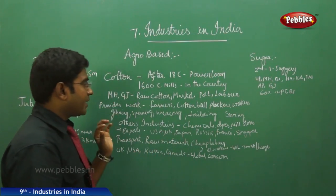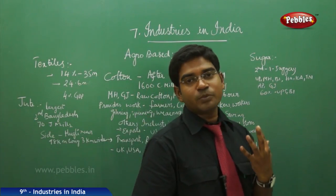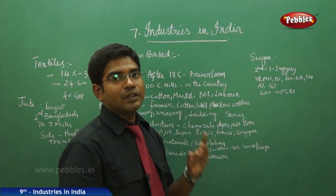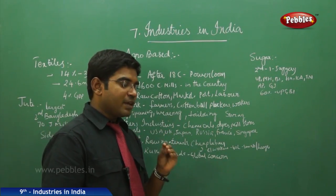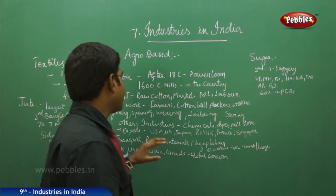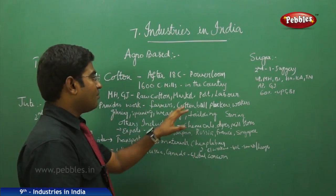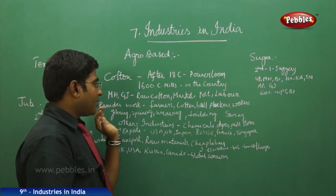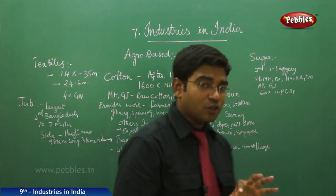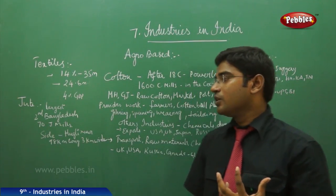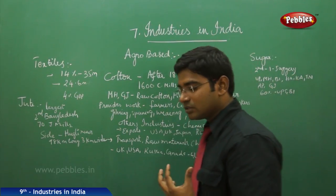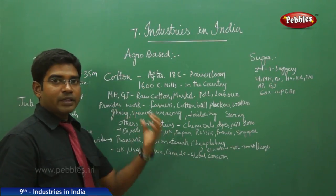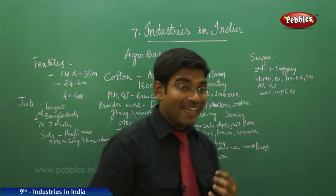The reason these mills are located there is due to key factors that make a place an industrial hub: availability of raw materials, labor, and transport. The cotton industry provides work not only for farmers but also for non-agricultural workers such as cotton ball pluckers, ginning workers, spinning mills, weaving, tailoring, and related occupations.